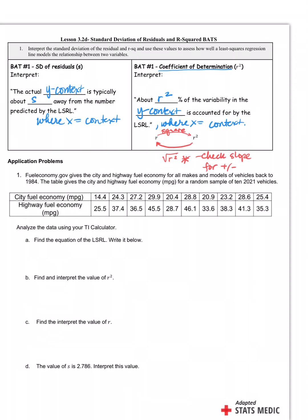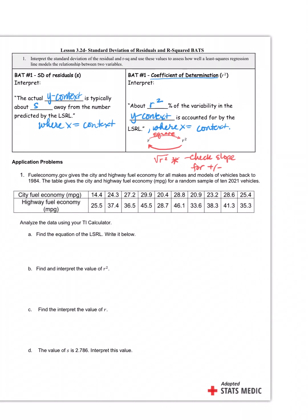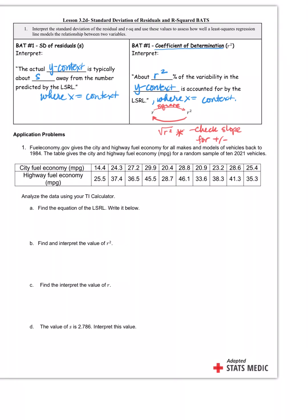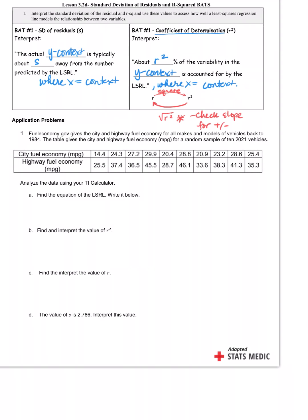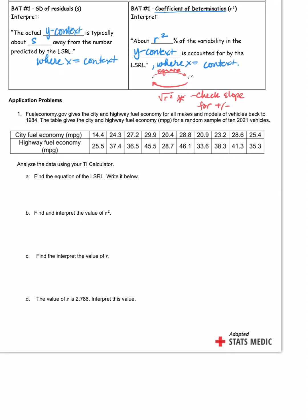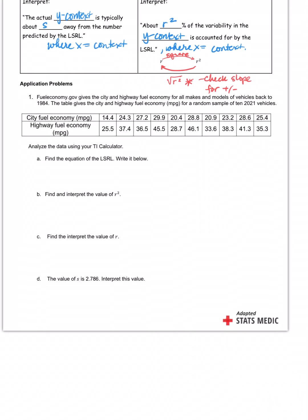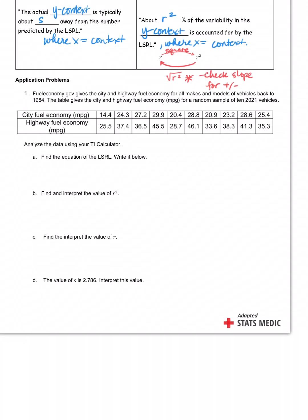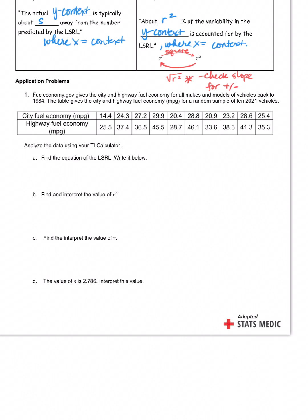Now here's the same example we were just doing on our previous simulation. There's the regression line, right, up below. We already did that, right. Now look at your screen and find and interpret r-squared. So what does your output tell you that r-squared is?